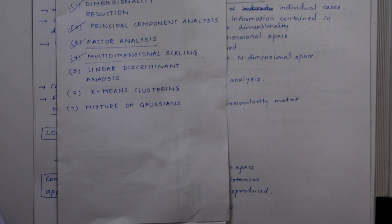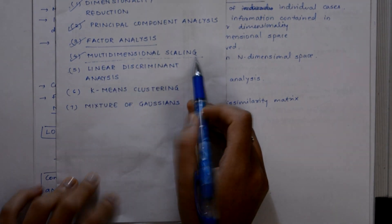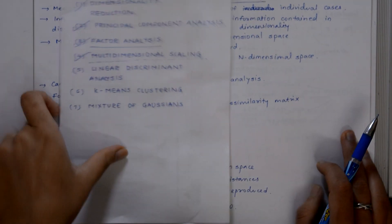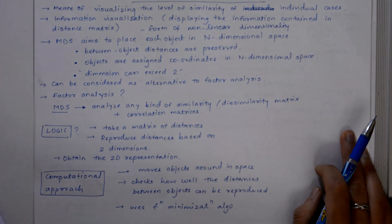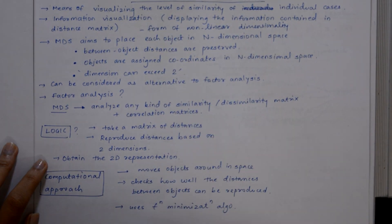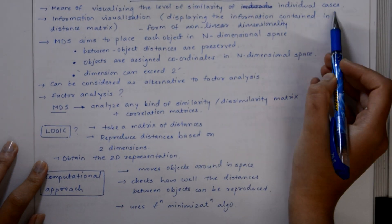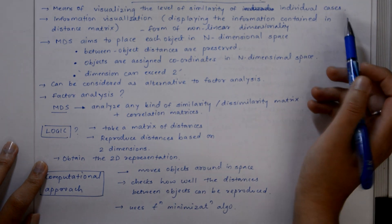Hey guys, welcome to my channel. Today we are going to talk about multidimensional scaling. This is the fourth part of the series. Multidimensional scaling is a means of visualizing the level of similarity of individual cases information visualization.